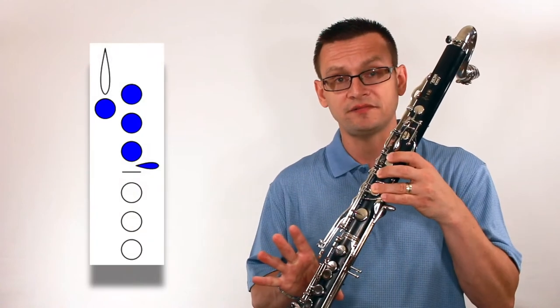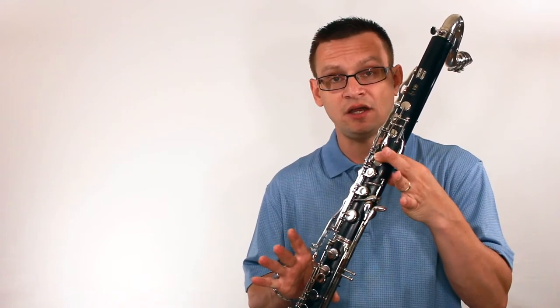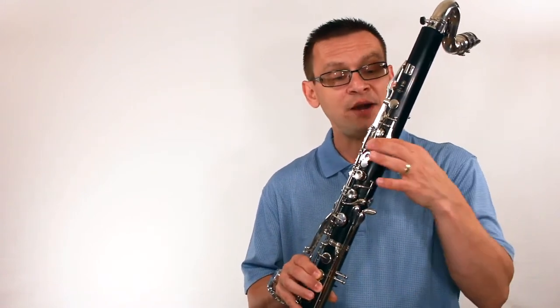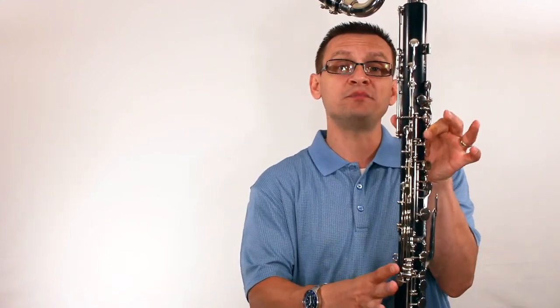Then we'll need our C sharp which is our pinky and our C fingering, D, E, F sharp as we know, G, and then we're going to need an A sharp to make this harmonic minor. A sharp is the same fingering as we use for B flat.